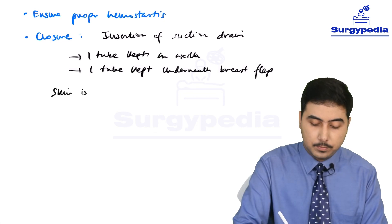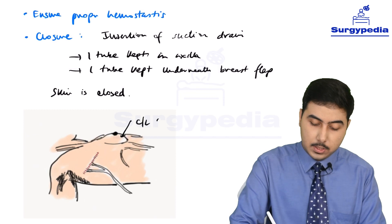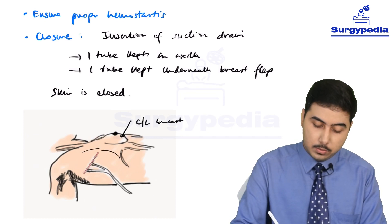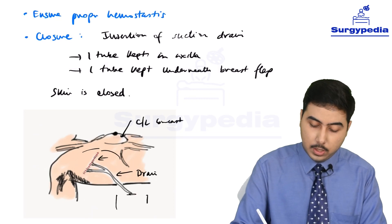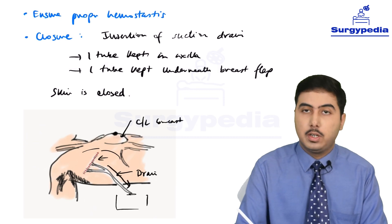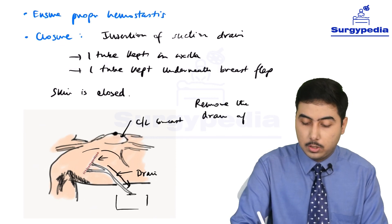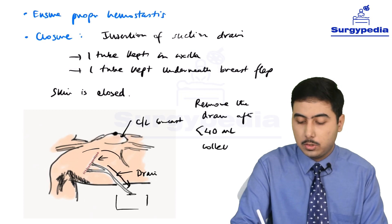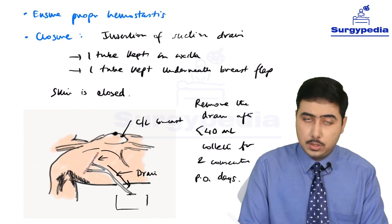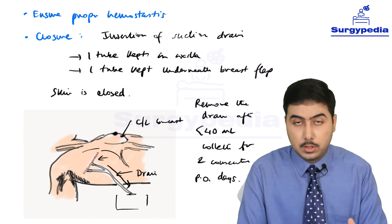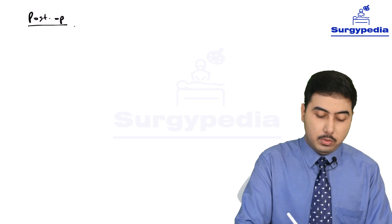The wound is then closed. In the diagram, we can see the contralateral breast, the operated area with the closed incision, and the drain with two tubes connected to a vacuum drain. The vacuum is activated so fluid from the operative site drains continuously. The drain is removed postoperatively when output is less than 40 ml for two consecutive days.